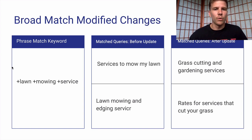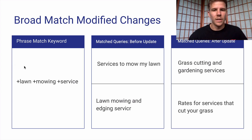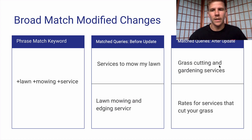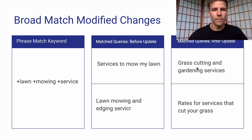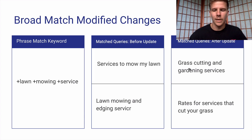This is going to apply to Broad Match Modified keyword match types in a similar fashion. The main difference is just going to be variation in the keywords — so lawn mowing service, grass cutting and gardening service, rates for services that cut your grass. There's just going to be more variation in what this keyword is going to show on, whereas before it wasn't going to allow for such variation in these specific keywords.